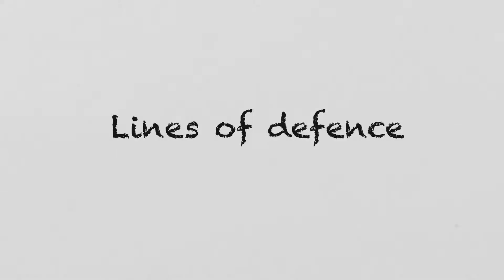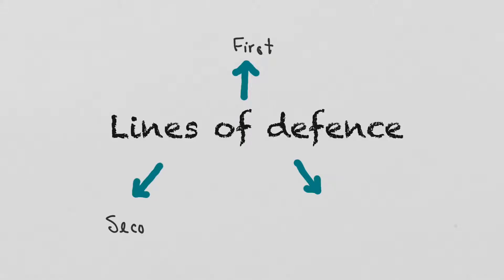We're going to talk about the lines of defense against infectious disease, and there are three of them: the first line, the second line, and the third line of defense, and they occur in order. If the first line fails, the second one comes into play, and if that one fails, the third one comes into play. The first and second lines are non-specific — they just act on everything to prevent disease. The third line is specific and mounts a targeted attack on a specific pathogen to eradicate it.